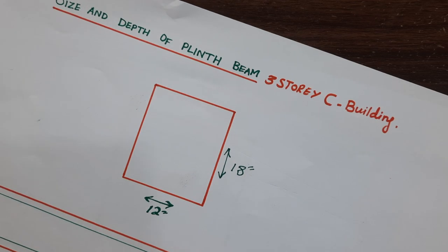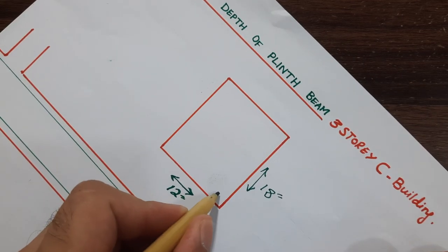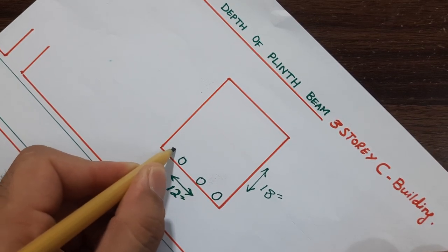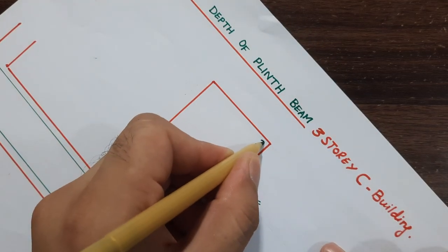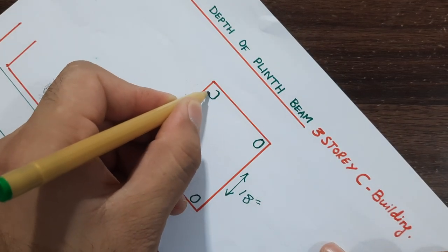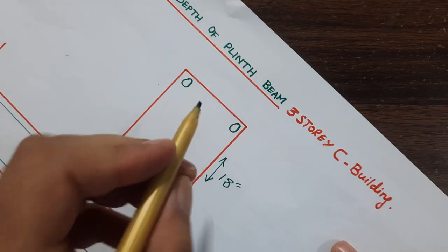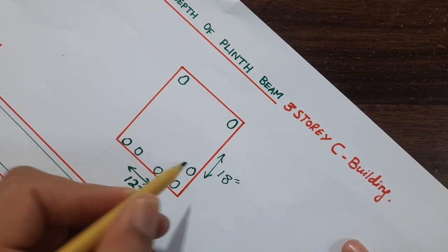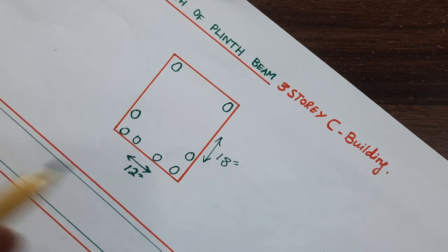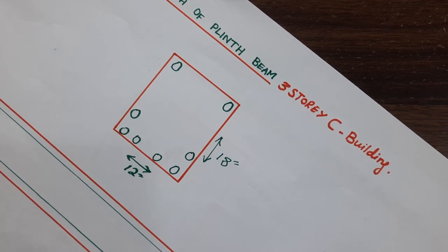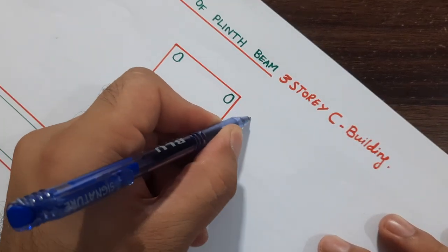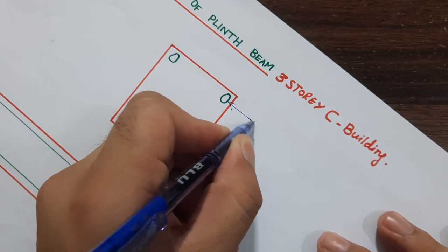The depth is 18 inches and the width is 12 inches. Inside, we have four numbers of steel rods at the bottom and two at the top. We also have two side bars at the bottom. You can see here we have two bars at the upper portion.